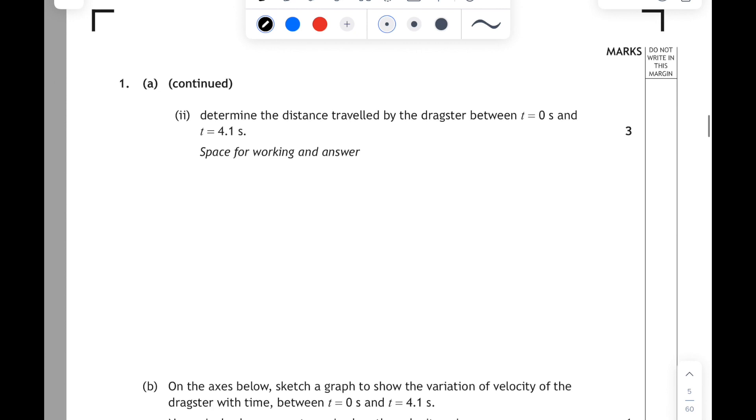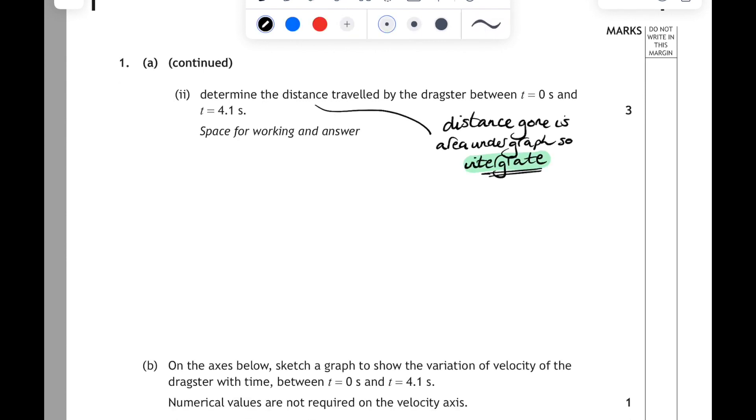Okay, 1a part 2, we have to determine the distance travelled by the dragster between t equals 0 and t equals 4.1 seconds. Well, distance gone, remember, it's the area under a velocity time graph, so we are integrating here. We're going to integrate the velocity relationship. So I'll just remind myself what that is: V equals 6.6t squared plus 2.2t, and we're going to integrate both sides with respect to time. So integrate V by dt and integrate the right-hand side with respect to time.